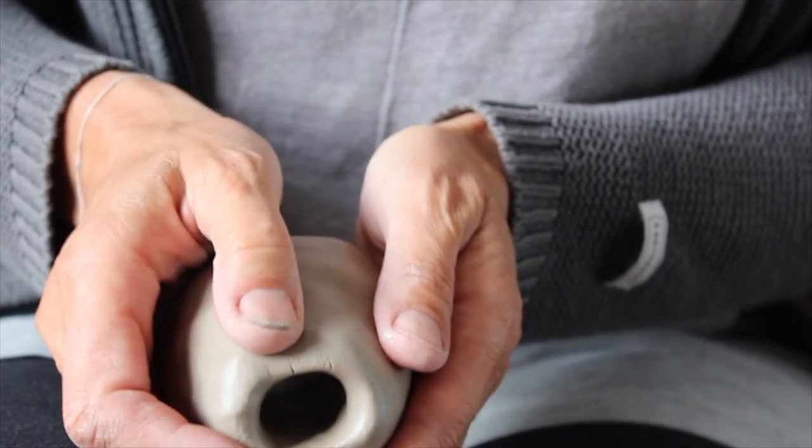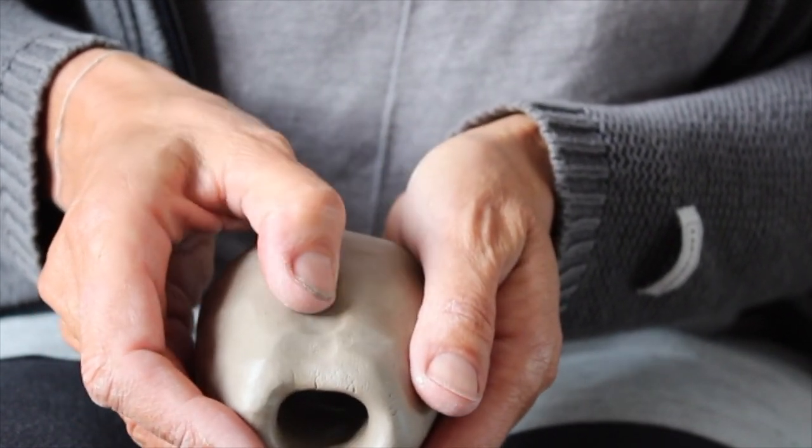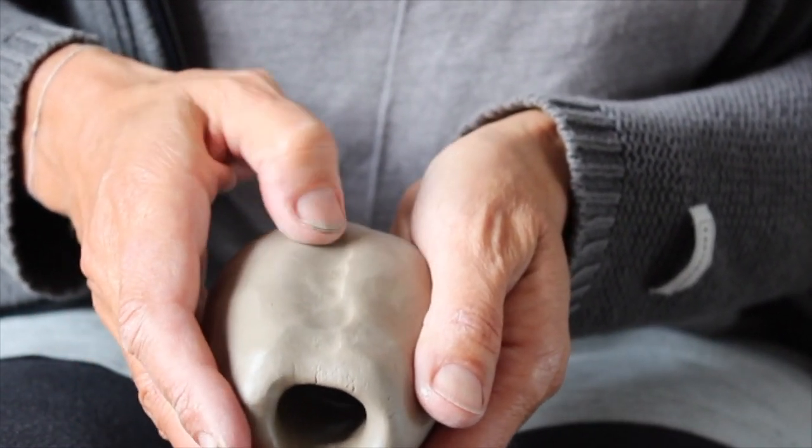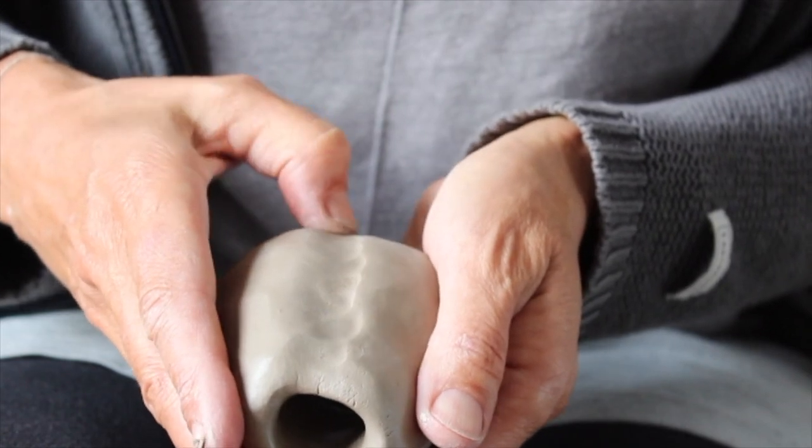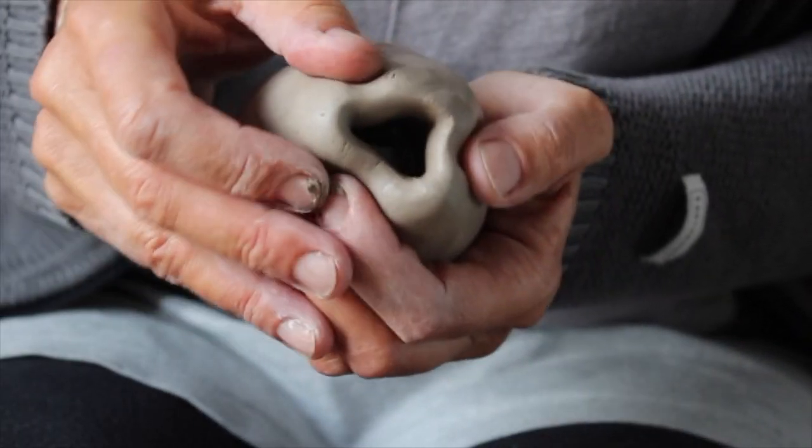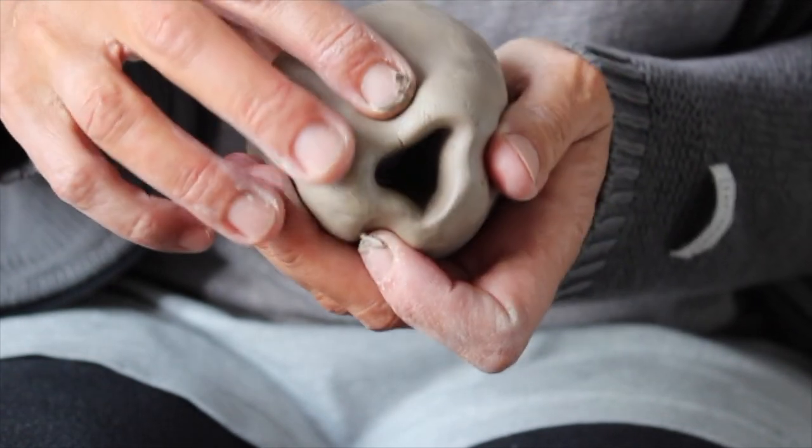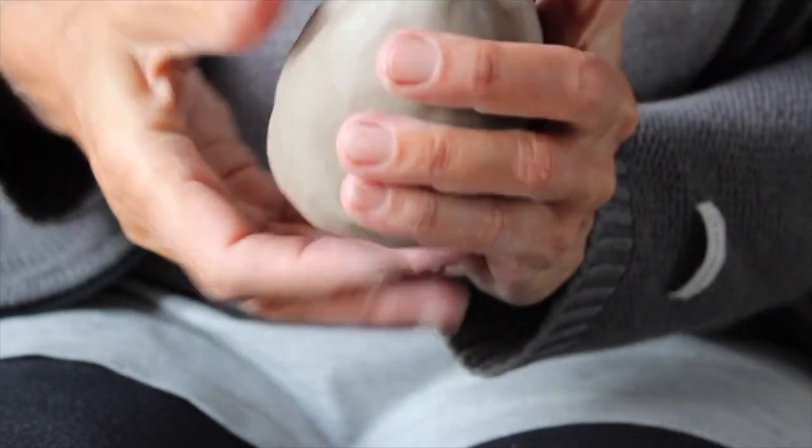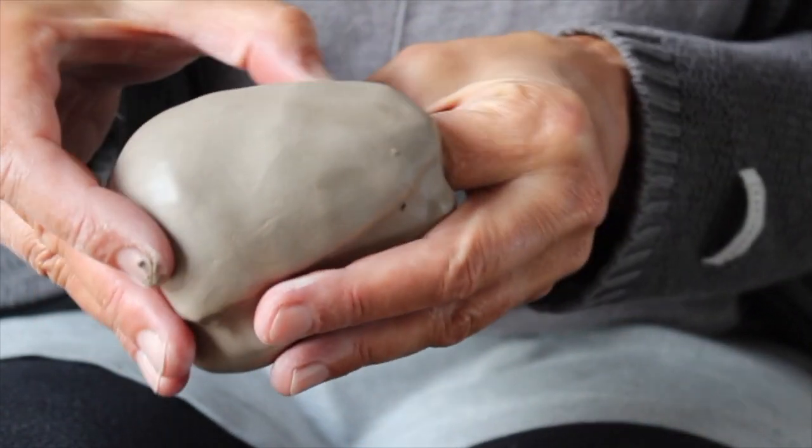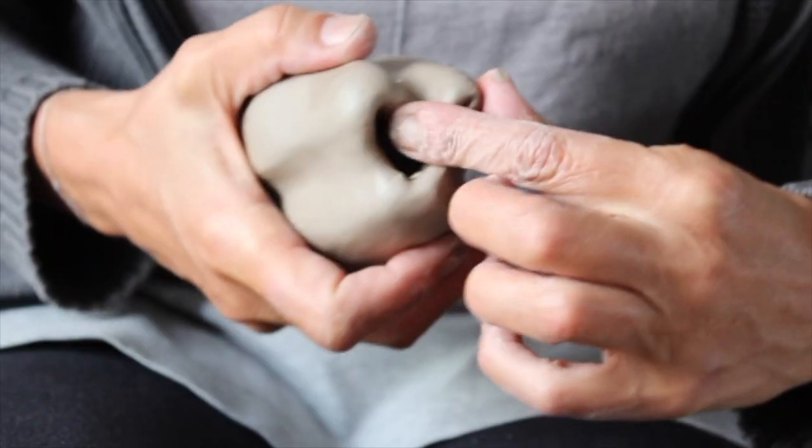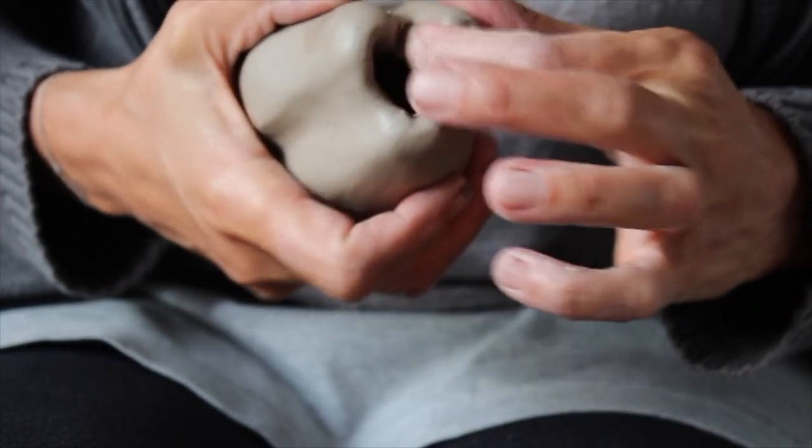Then indent the sides of the form three or four times. Press gently from the top and the bottom. Shape little heads on top of every slice.